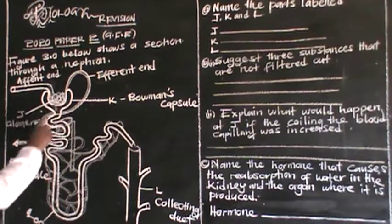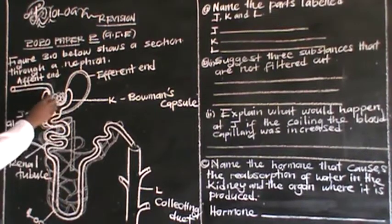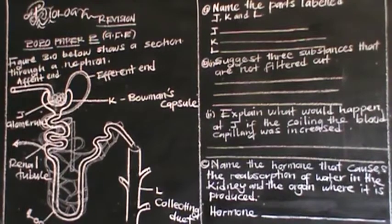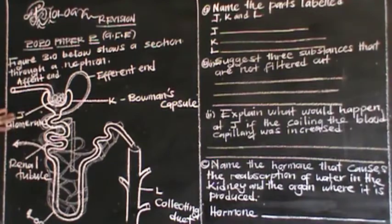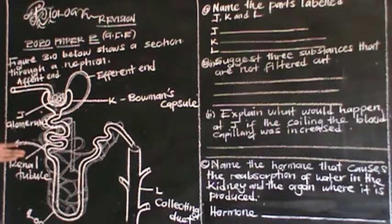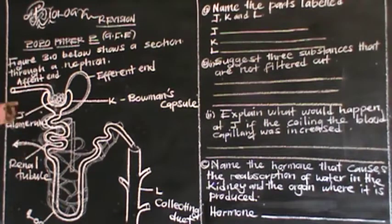For example, you may be asked to identify the process which takes place at J, which is our glomerulus. The process which takes place at J during urine formation is ultrafiltration. Ultrafiltration is the filtration of small molecules such as glucose, water, and salts.